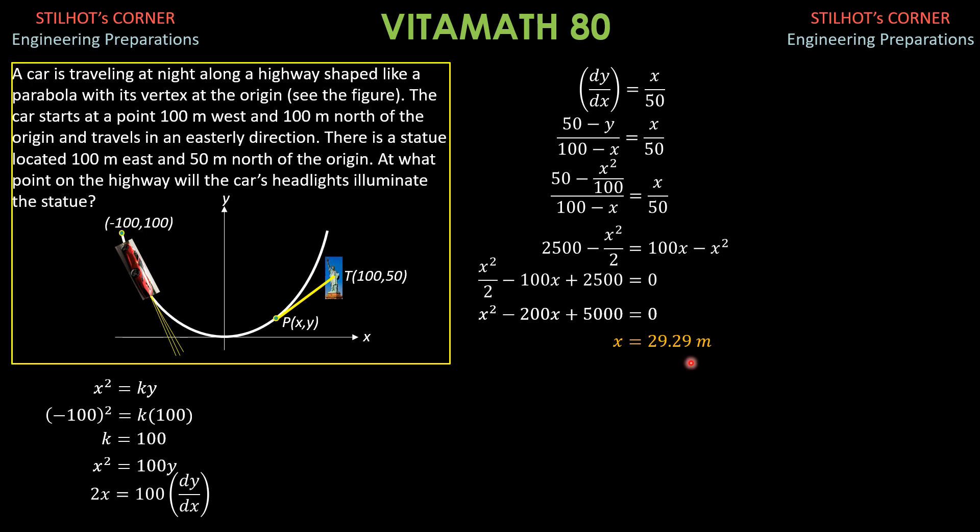So, x is equal to 29.29 meters. Then, y is 29.29 squared over 100. And y is equal to 8.579 meters. Therefore, the coordinates of the point.